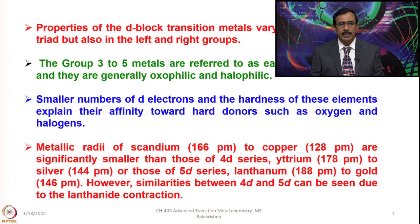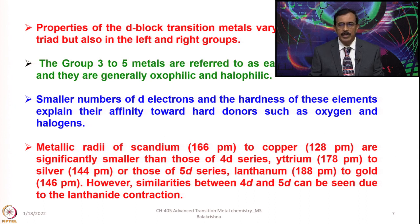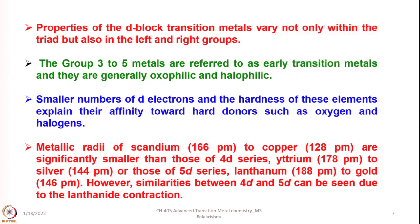The metallic radii of scandium to copper vary significantly, from 166 picometers to 128 picometers, and these are smaller than those of the 4D series. For example, yttrium starts with 178 picometers and silver is 144 picometers. The 5D series starts with lanthanum at 188 picometers and gold at 146 picometers. However, similarities between the 4D and 5D series can be seen due to the lanthanide contraction, which I shall explain in more detail later.